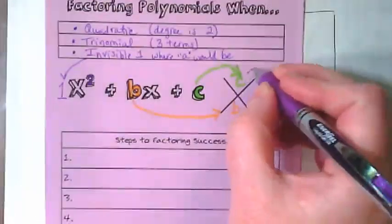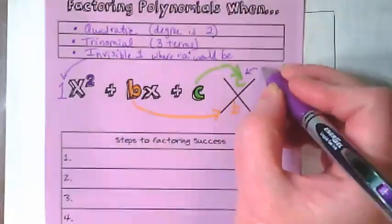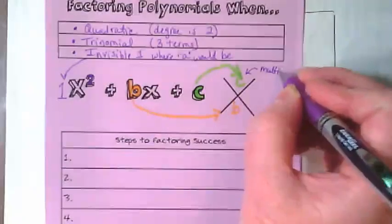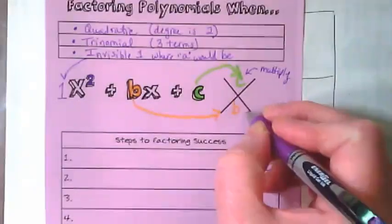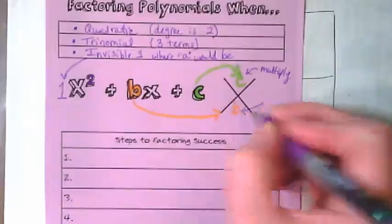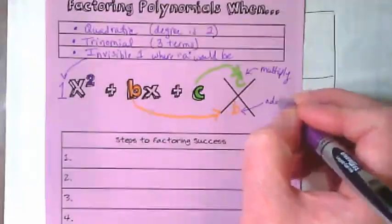When we're using these x puzzles we have to remember that the c term is something that gets, it's the answer to the multiplying, and the b term is when something is added.